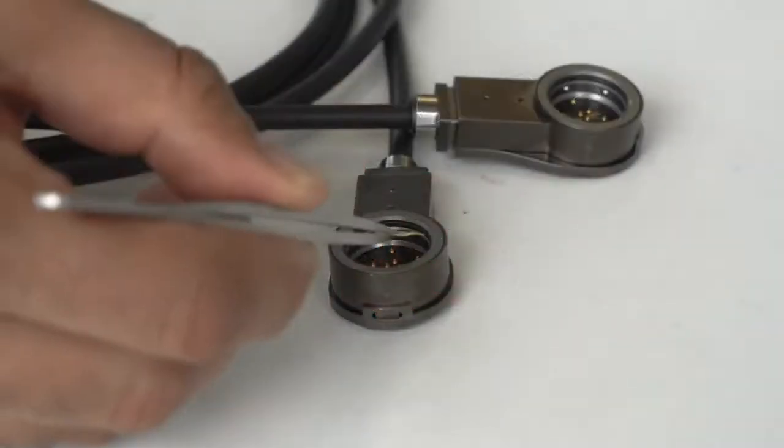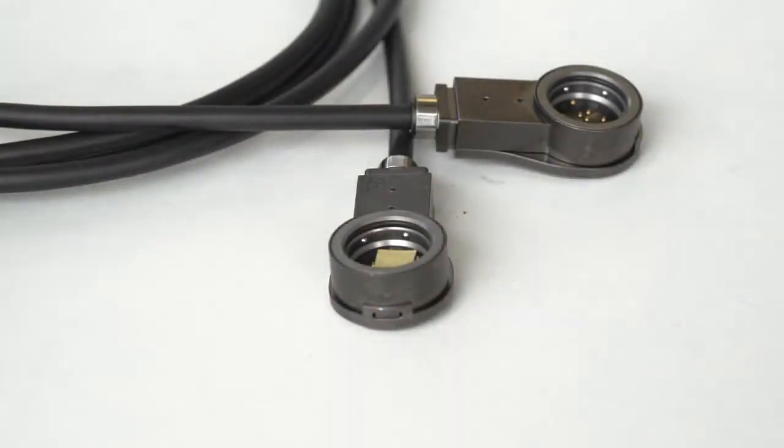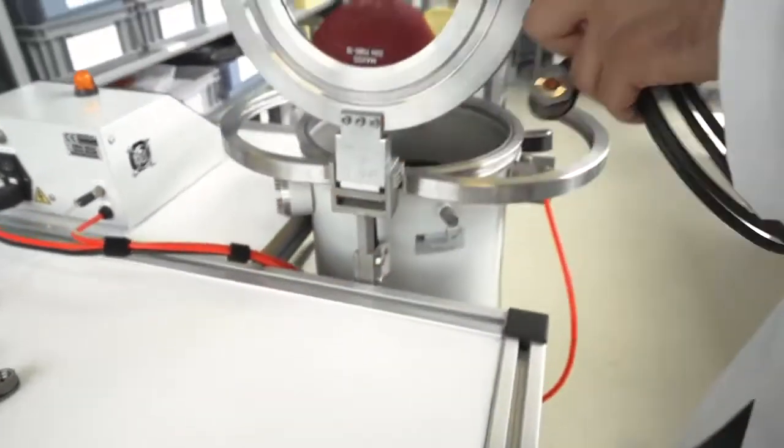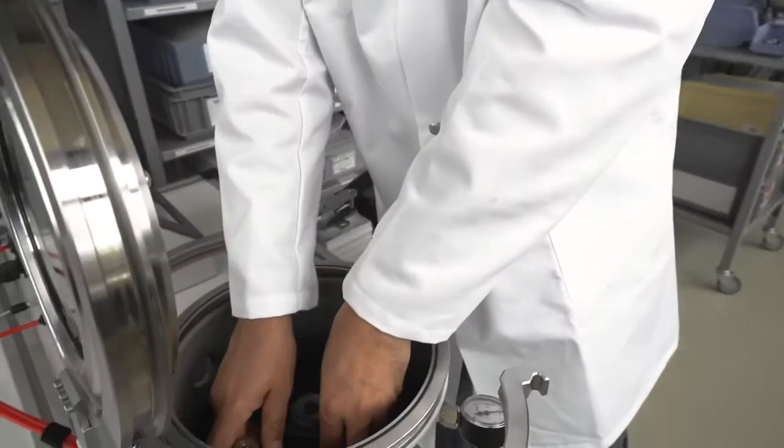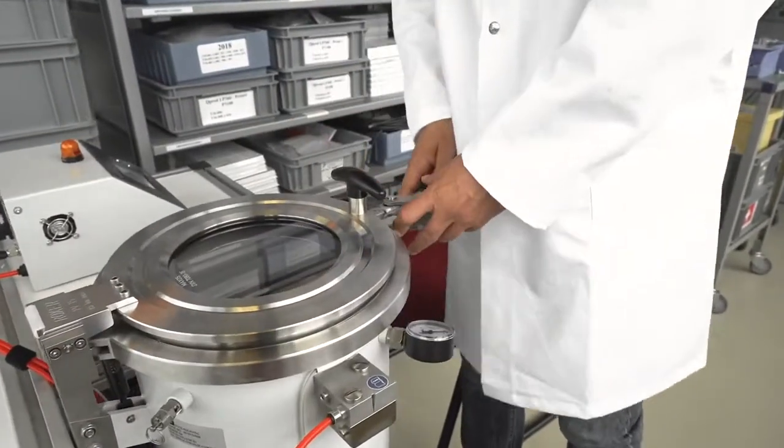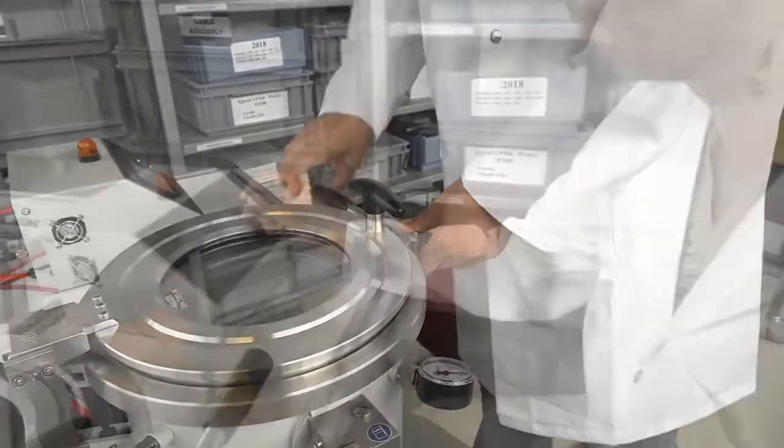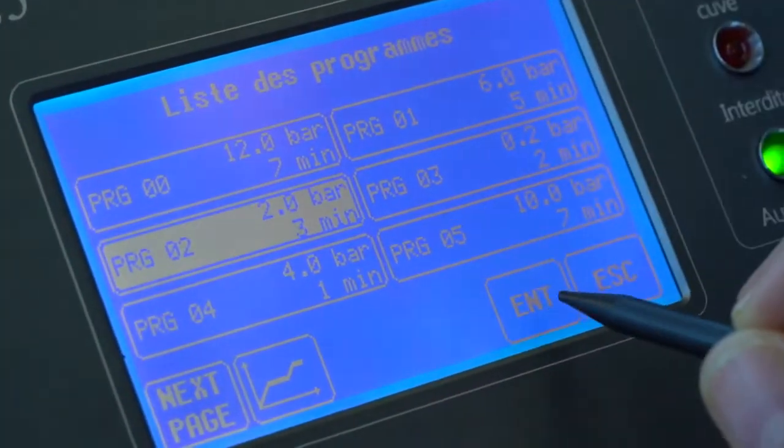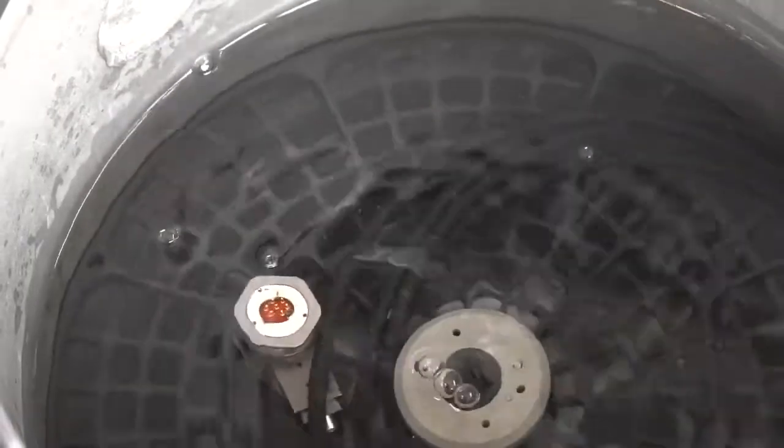Due to its sealing performance, the Fischer Freedom Series is the ideal connectivity solution for extreme environments. A small pH indicator paper is placed between the plug and receptacle. The connectors are mated and then immersed in water inside the pressure vessel at two bars, which corresponds to an immersion depth of 20 meters.